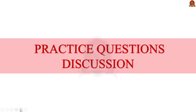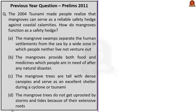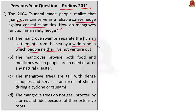Let us take up the practice questions framed based on today's discussions. The first question is based on mangroves, asked in prelims 2011: 'The 2004 tsunami made people realize that mangroves can serve as a reliable safety hedge against coastal calamities. How do mangroves function as a safety hedge?' Option A states mangroves form zones separating human settlements from the sea where people neither live nor venture out — this is incorrect because about 50% of Sundarbans islands are inhabited. Option B states mangroves provide food and medicines after natural disasters — this does not substantiate mangroves as a safety hedge, so it is also incorrect.